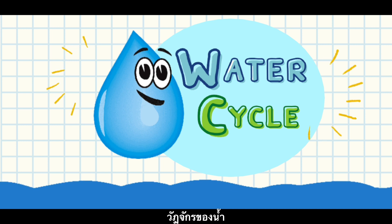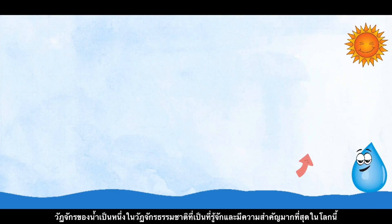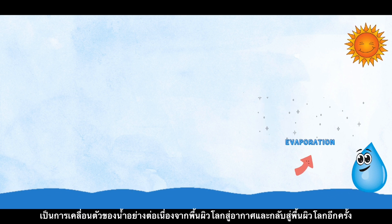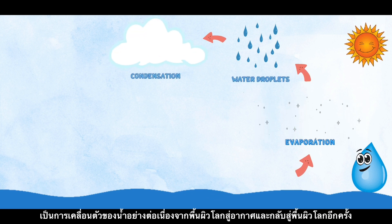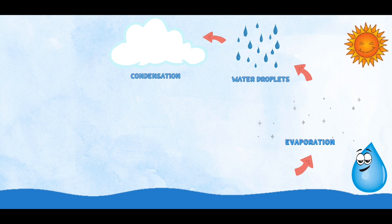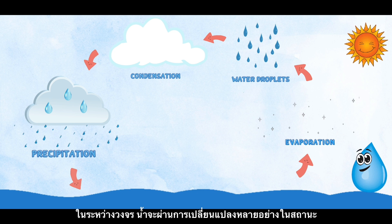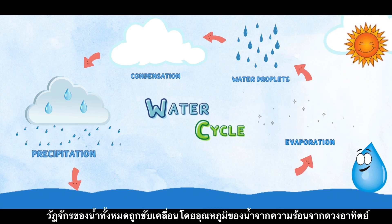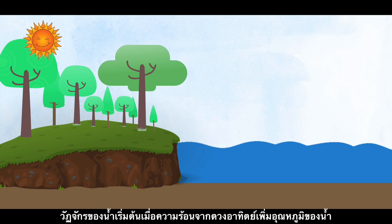The water cycle is one of the most well-known and important cycles of nature on this planet. It is the continuous movement of water from the earth's surface into the air and back to the earth's surface again. During the cycle, water undergoes several changes in state. The whole water cycle is driven by the temperature of water from the Sun's heat. This video will show you how the water cycle runs.